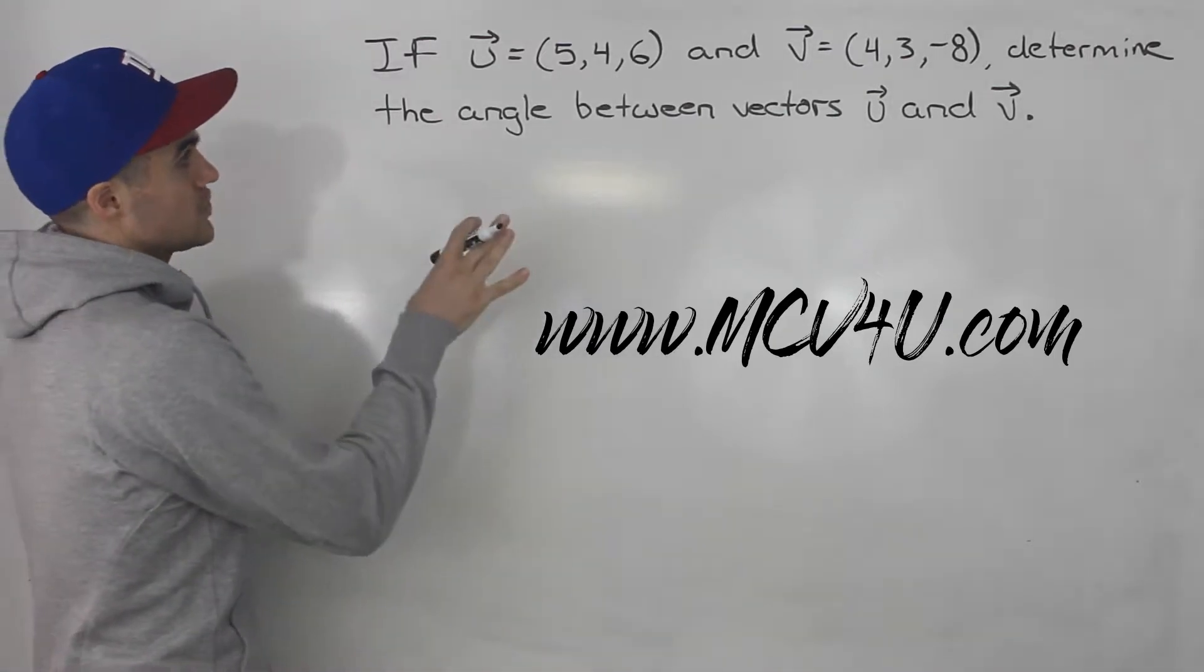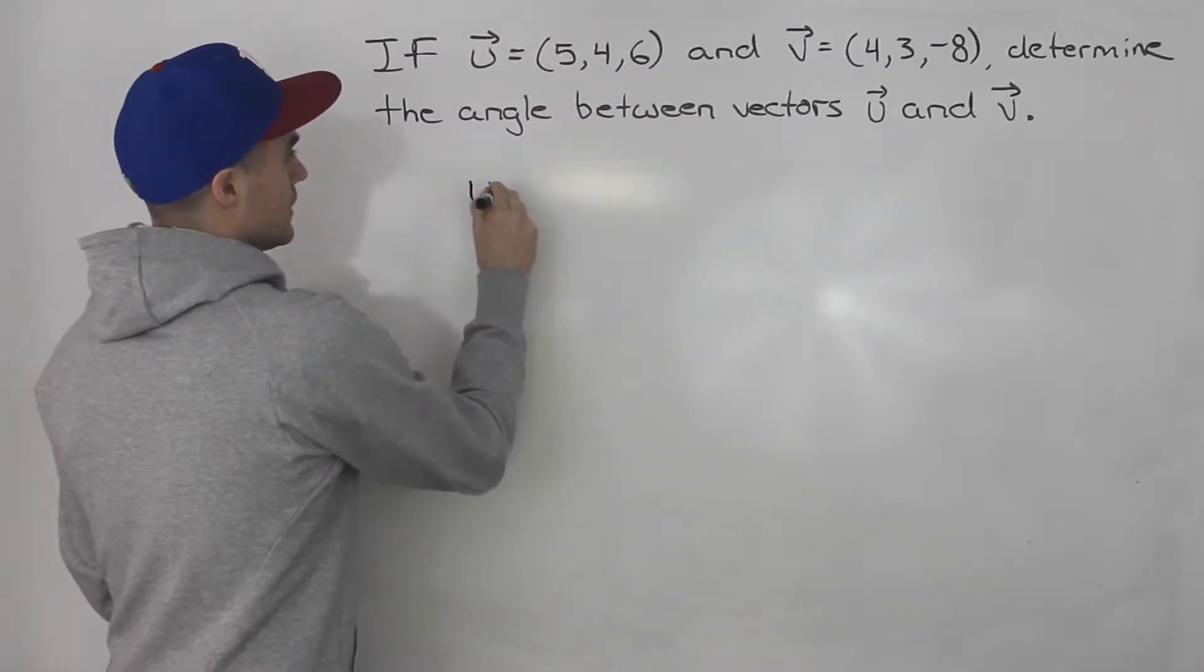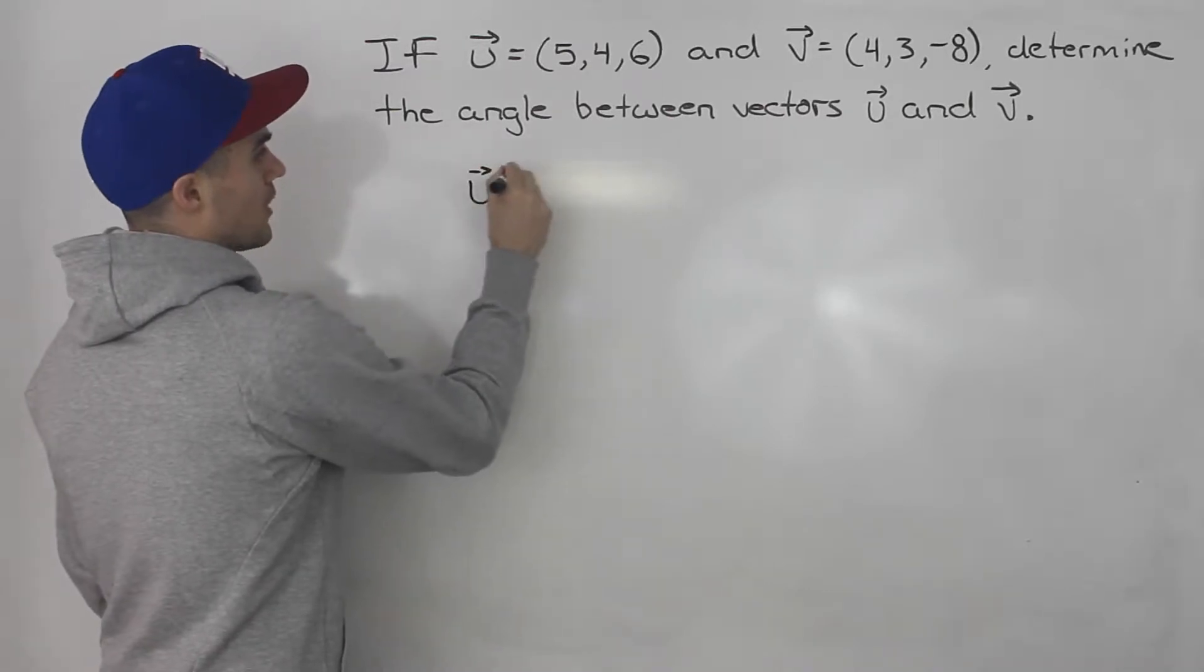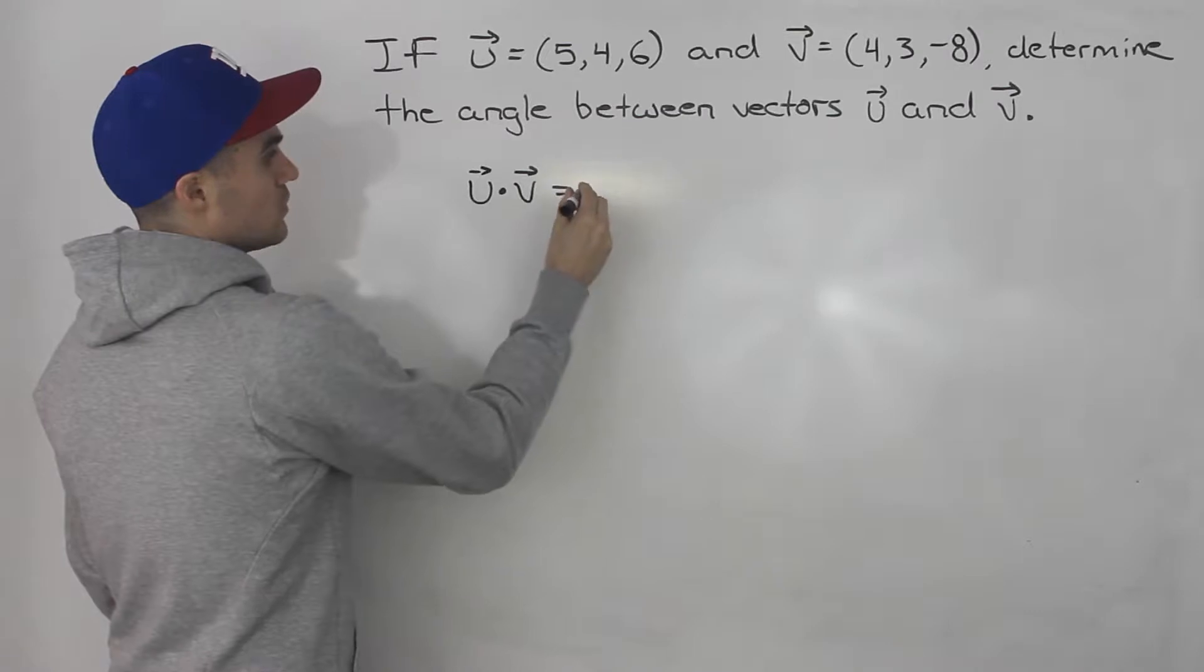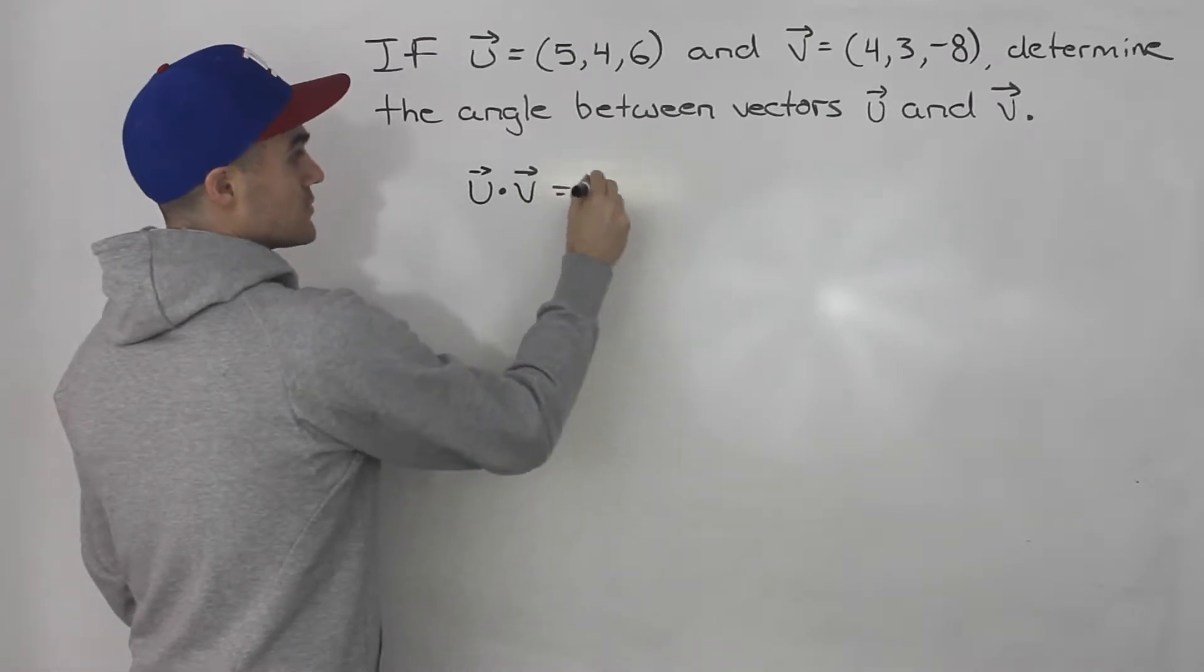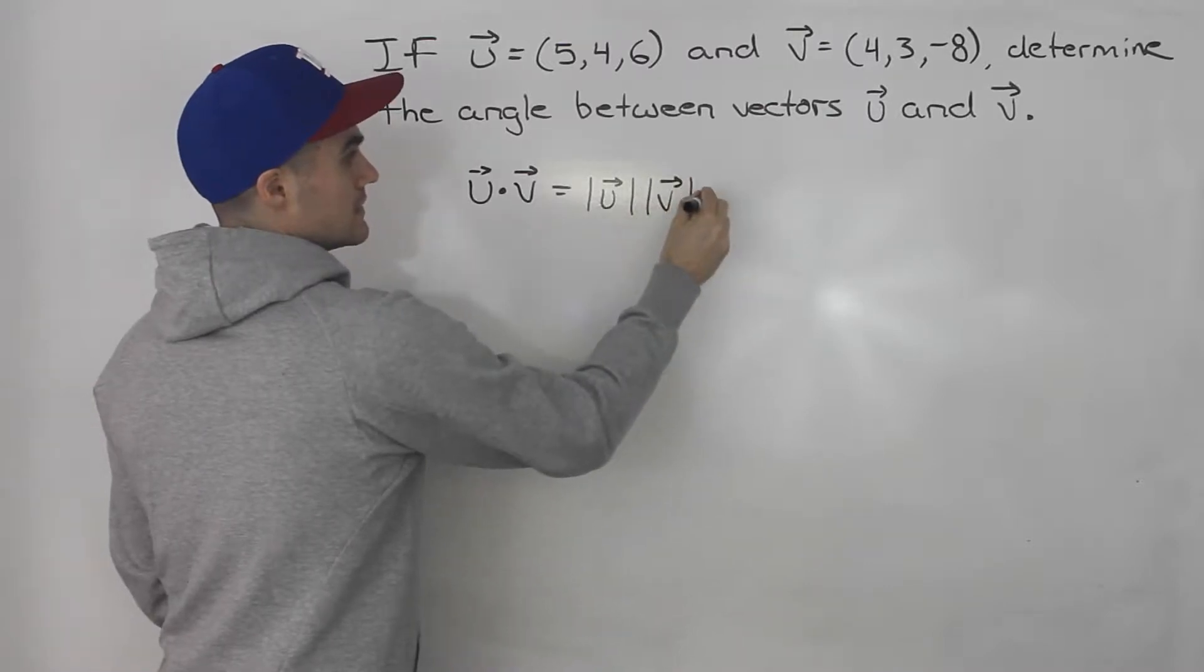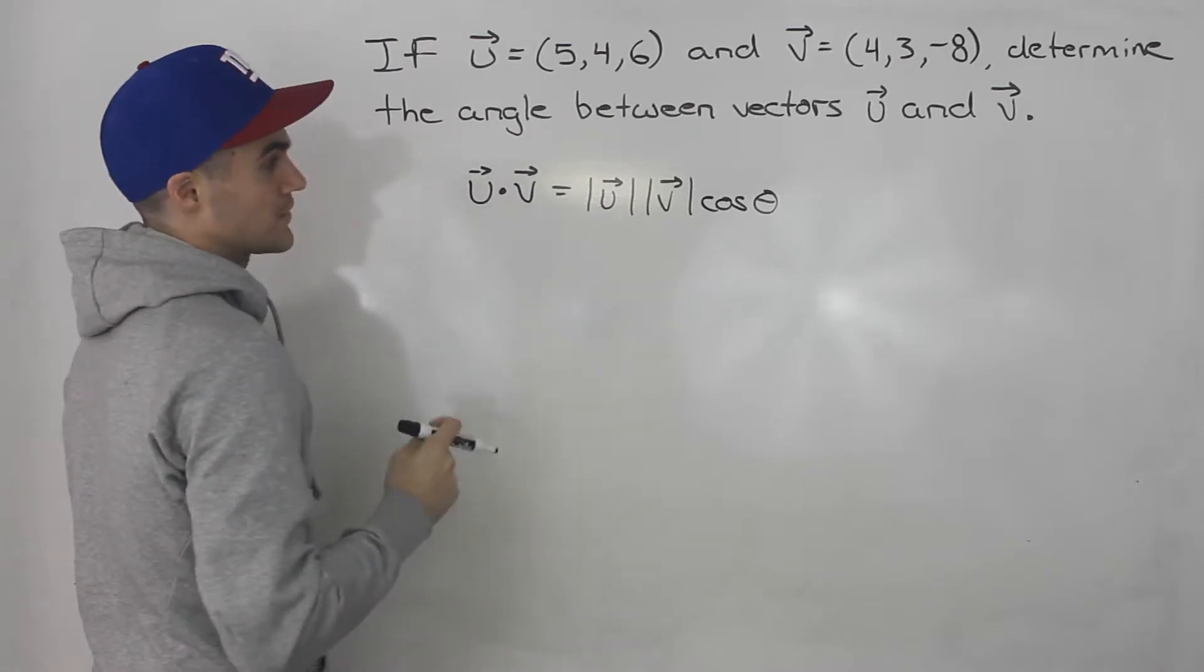So when you get a question like this, they gave you these vectors in component form. What we can do is use the formula for the dot product. So we know the dot product between u and v would equal the magnitude of u times the magnitude of v times cos of the angle between the two vectors.